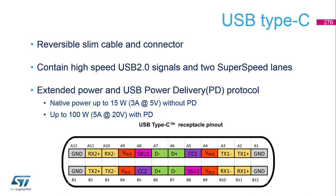Interesting from the microcontroller point of view are the power options introduced with Type-C. The default power option can be up to 15 watts — 5 volts at 3 amperes. An additional power delivery protocol using uni-directional communication on the CC pins can negotiate power profiles up to 100 watts, at 20 volts and 5 amps.